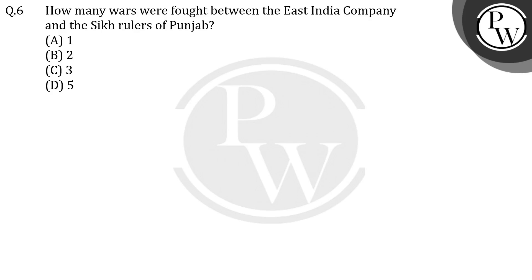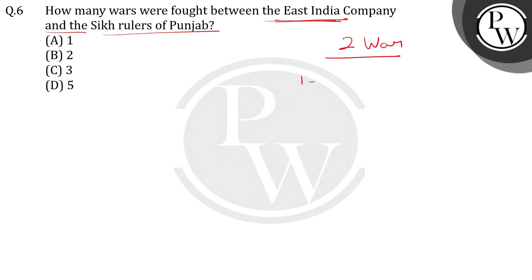Hello everyone, let's see the question. The question says: how many wars were fought between the East India Company and the Sikh rulers of Punjab? Punjab ke Sikh rulers ke bich mein aur East India Company ke bich mein kitne yudh lade gahe? Aap sabhi jante hain ki Sikh Empire aur East India Company ke bich mein 2 wars lade gahe — 2 yudh lade gahe. Pahla huwa 1845 mein.